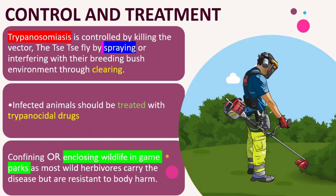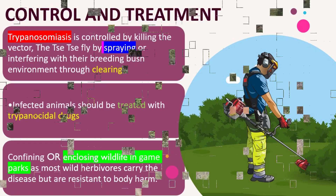Trypanosomiasis is controlled by killing the tsetse fly vector through spraying, or by interfering with their breeding bush environment through clearing. Infected animals should be treated with trypanocidal drugs. Wildlife should be confined in game parks, as most wild herbivores carry the disease but are resistant to bodily harm.